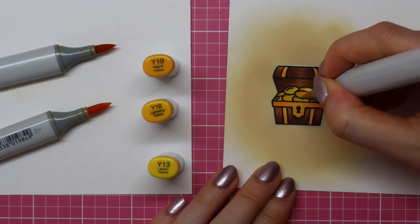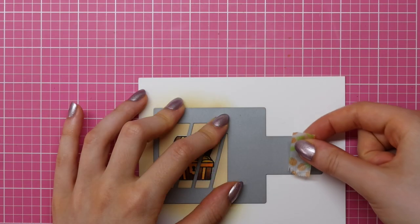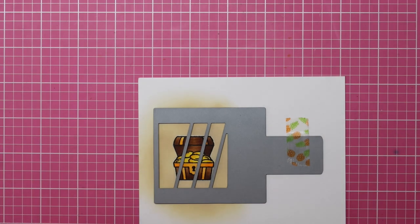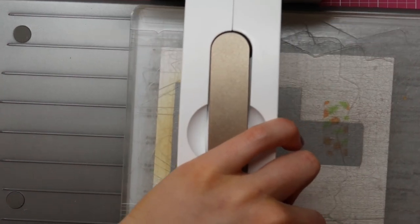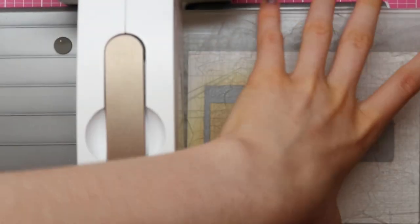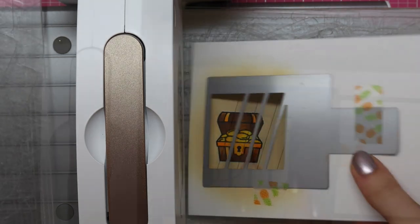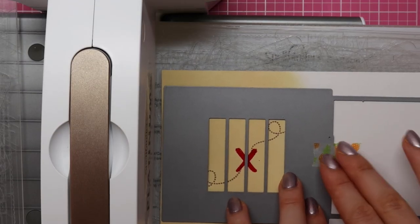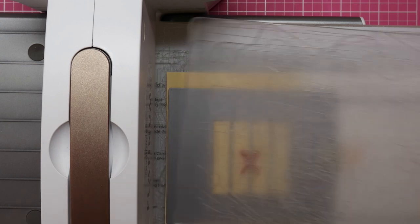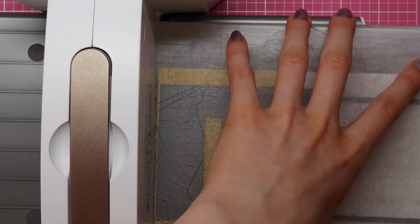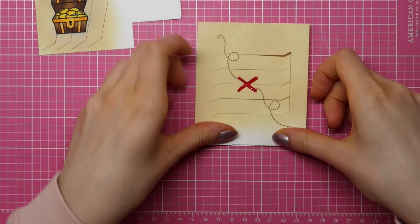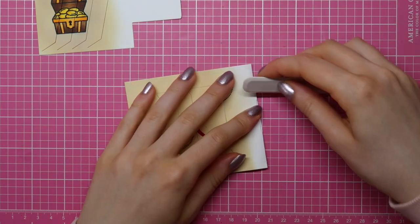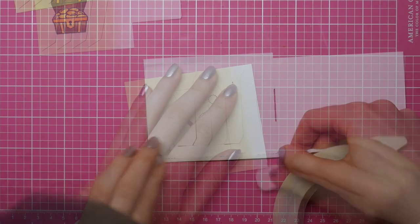For the gold inside the treasure chest, I used Y19, Y18 and Y13. Then I am going to die-cut the two main panels from the Magic Picture Changer die-cut set from Lawn Fawn. You can see through that little square, so you can position your die-cuts perfectly and it's completely centered. Now that I have my two main panels, I am going to fold along the scored lines that this die has created for us with my bone folder.